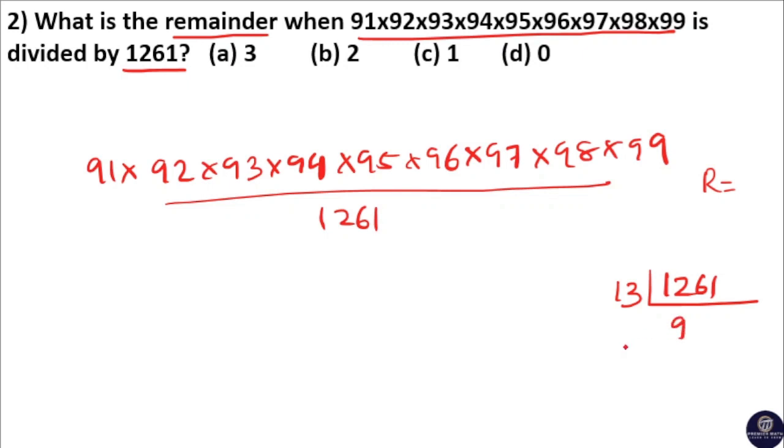13 goes 9 times in 126. 13 into 9 is 117, remaining is 91. 13 goes 7 times in 91. So the factors of 1261 are 13 and 97.